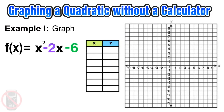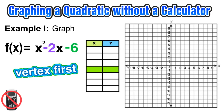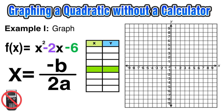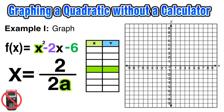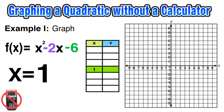Let's try one more example: graph the quadratic f of x equals x squared minus 2x minus 6 without using a calculator. The first thing we want to find is the vertex. Using the axis of symmetry formula x equals negative b over 2a: replace b with negative 2, so negative negative 2 is positive 2. In the denominator, a is 1, so 2 times 1 is 2. Then 2 over 2 equals 1, so the x-coordinate of the vertex is positive 1.